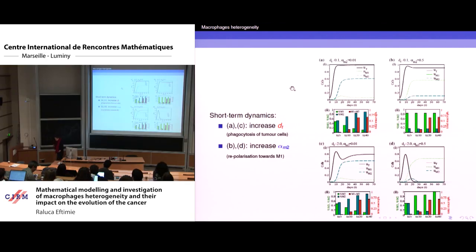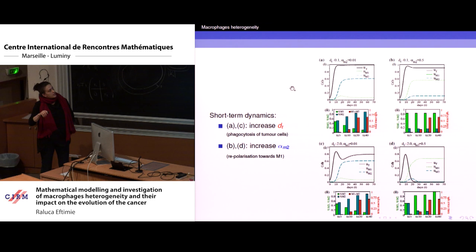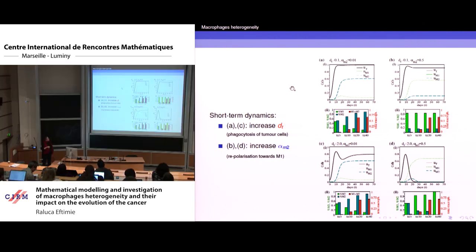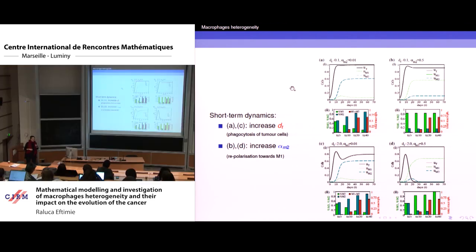If I increase D_T — the phagocytosis of tumor cells — moving along the vertical axis from A to C, the baseline dynamics show tumor growing to its carrying capacity with a very large number of M2 cells. Increasing D_T produces a dip in the tumor. Interestingly, you still have a large number of M2 macrophages, yet if the macrophages present have a very high phagocytosis rate, they can still keep the tumor below its carrying capacity.